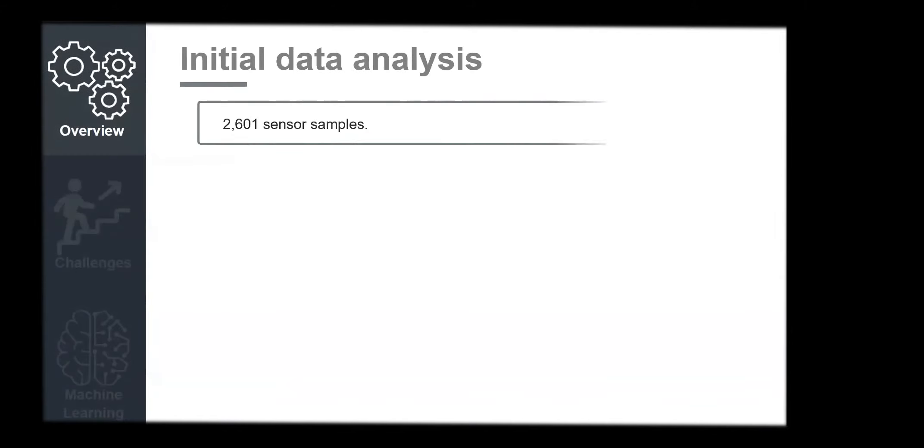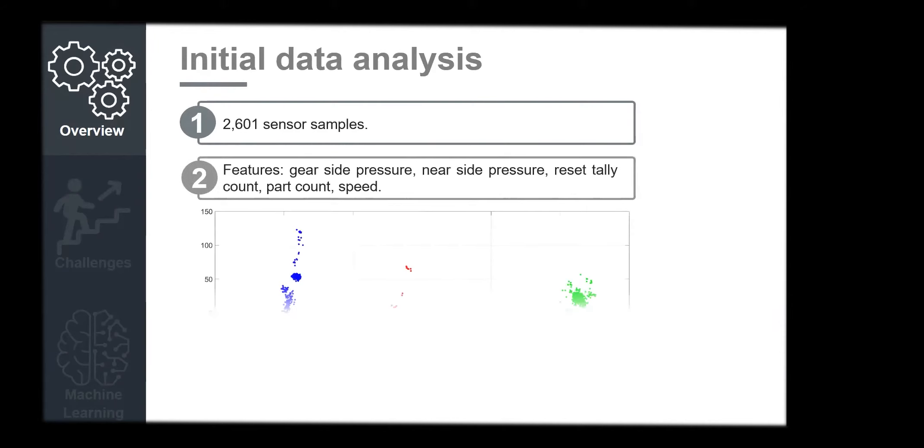So some of the data which we have collected: we have collected 2601 sensor samples. We have collected the gear side and near side pressures at the two clamping points, the tally count which is the number of meters going through that tool, the number of parts that tool is making, and the speed.